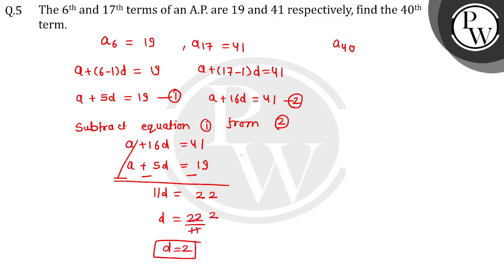Now to find A from equation 1, A plus 5D equals 19. A plus 5 into 2 equals 19. A plus 10 equals 19. A is 9. What do we need to find? A40.